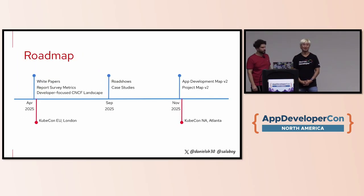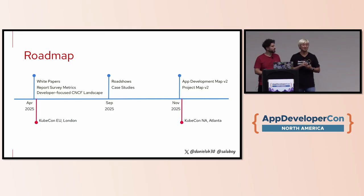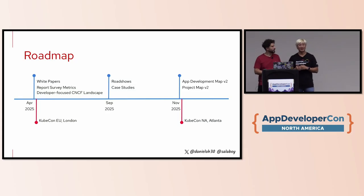As for what's next, we have a bunch of plans as a working group. We are proactively working with other working groups under the TAG, like platform engineering. We're going to create a new white paper that showcases and explains tools, use cases, and best practices. We'll also report and share all survey metrics on the CNCF site so everyone can see them. And we're going to update the CNCF landscape to filter for developer-focused application development tools.